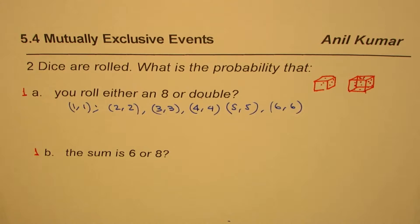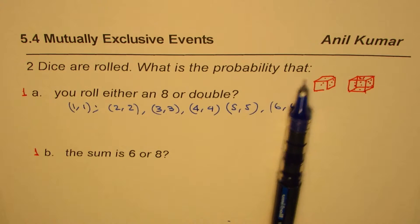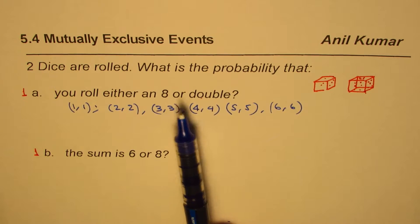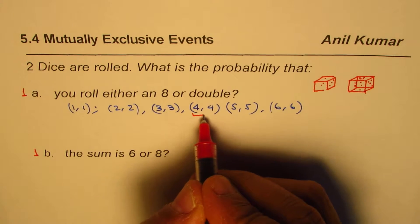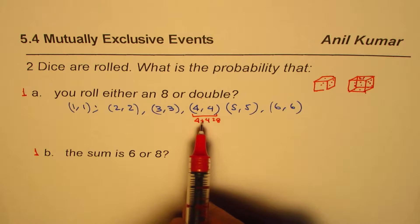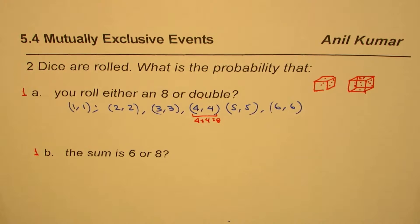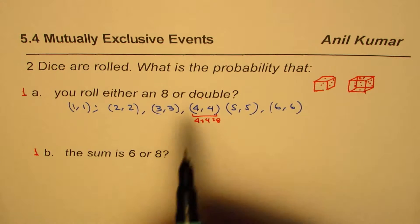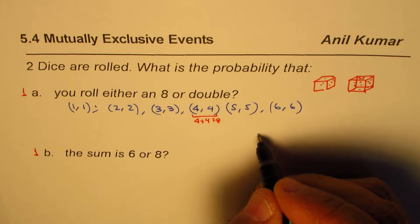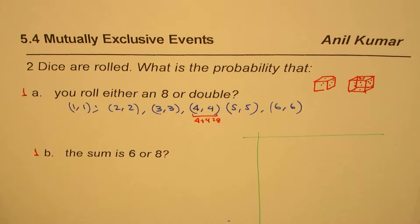Two dice are rolled — what is the probability that you roll either an eight or a double? We're adding the two numbers on the dice and looking for favorable cases when we get an eight or a double. Notice that four plus four equals eight, so 4-4 is both a sum of eight and a double. This means the events are not mutually exclusive, since one combination that makes eight is also a double.